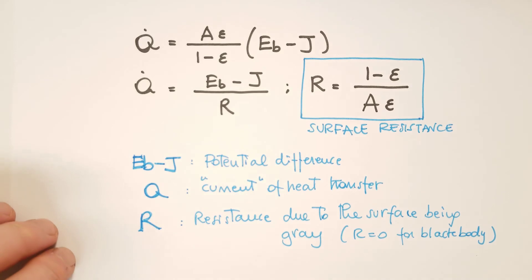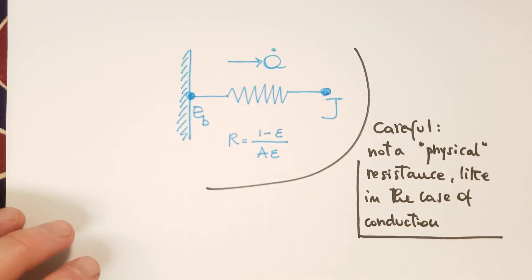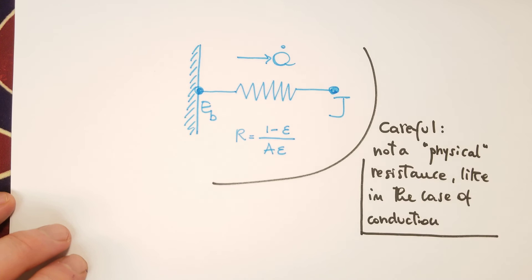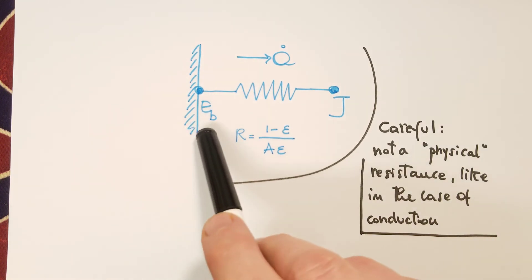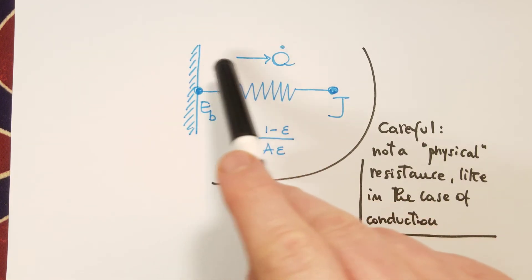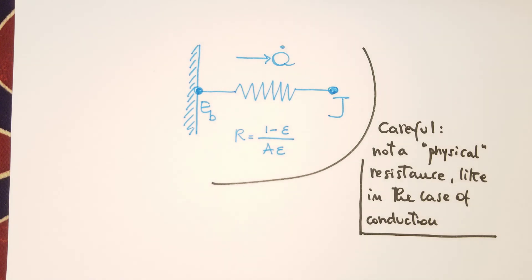So we can represent this surface resistance in this way. So we have a piece of network. And at the nodes, we have Eb and J. Now, if you remember, in the analysis of conduction at the nodes, we had the temperature. So here the analogy is slightly different because we have Eb and J at the nodes, but we still have Q that flows through the network.